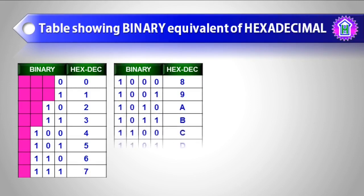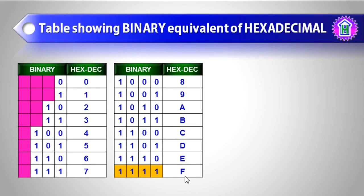As you can see, the binaries of hexadecimal 0 to F is shown in the table, and the highest digit of hexadecimal, which is F, is occupying four binary places.